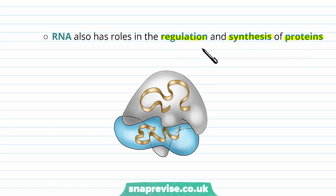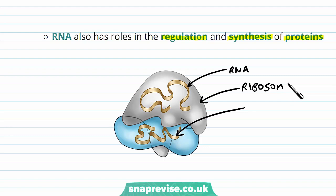We'll go into protein synthesis in more detail in other videos, but here's just an image indicating these strands of RNA which act as the messengers. This structure is also made of RNA, but it's called a ribosome, and it's made of slightly different types of RNA. So it has roles in making proteins at the ribosome, and also regulating how these proteins function and the shape of these proteins as well.